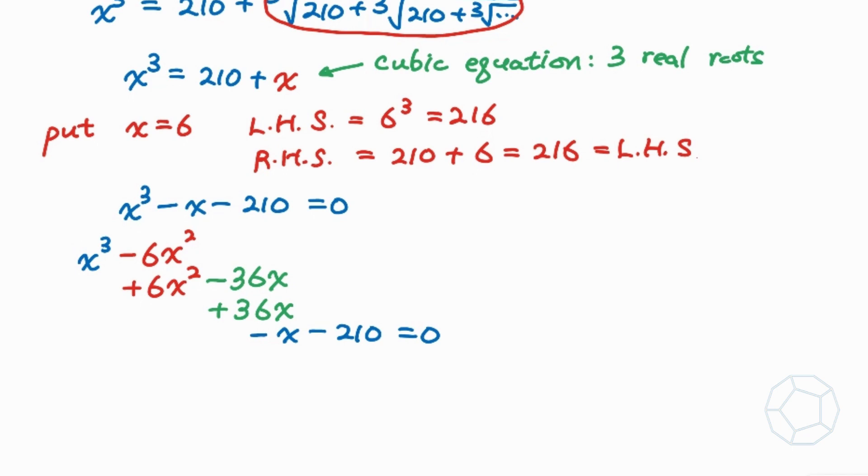So we break down the cubic polynomial into three parts. For the first part, take a common factor x square, then we'll have x minus 6 in the bracket. In the second bracket, take out 6x as a common factor, then we'll have x minus 6.